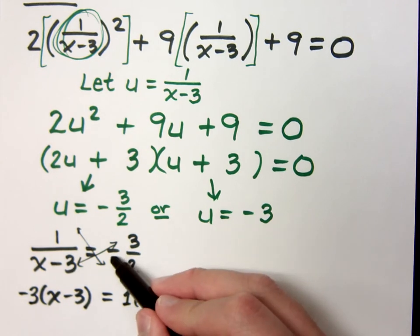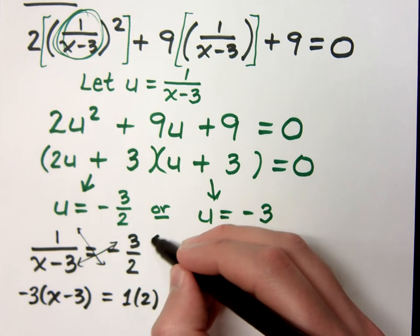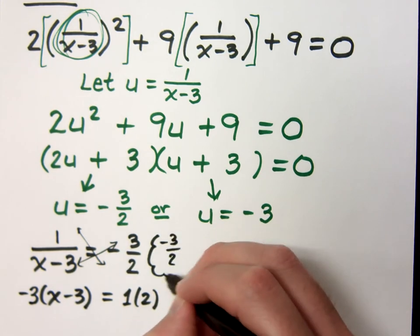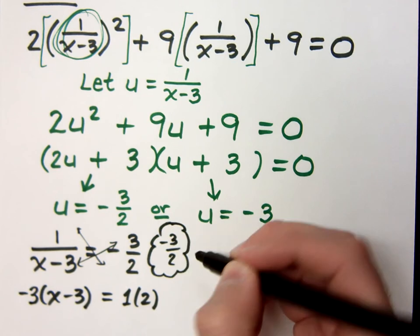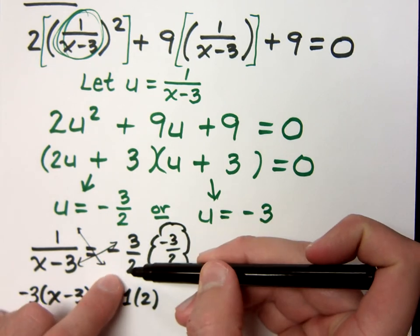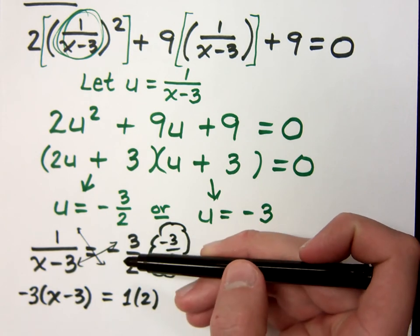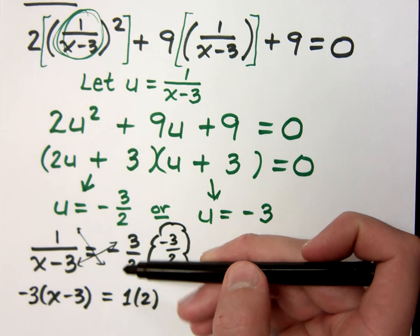Now, I do have a negative out front, so it may be better for you to think about this guy as negative 3 over 2. This negative does not apply to the 3 and the 2. It's not negative 3 over negative 2. If it were negative over negative, it would just be a positive, and that's not what I have.